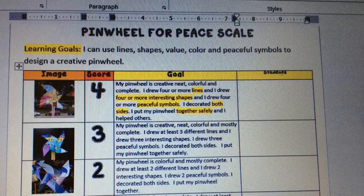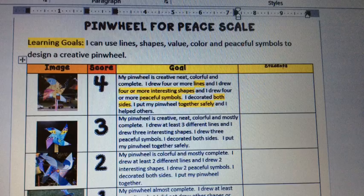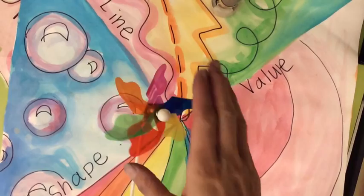A 4 would be a pinwheel that is creative, neat, colorful, and complete. It should have 4 or more lines, 4 or more interesting shapes, and 4 or more peaceful symbols. Both sides should be decorated and the student should be able to put the pinwheel together safely and help others.